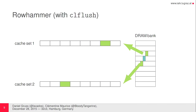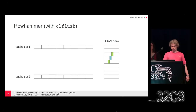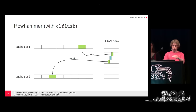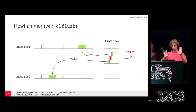The Rowhammer attack with the CLflush instruction: we have the DRAM bank plus cache sets, and there is a fixed mapping between DRAM cells and physical addresses, and thereby cache sets. If we already have data in the cache, we first call the flush instruction to throw it out of the cache. Then we reload it, then reload the other address, then flush again, then reload, flush, reload — and then we get a bit flip.